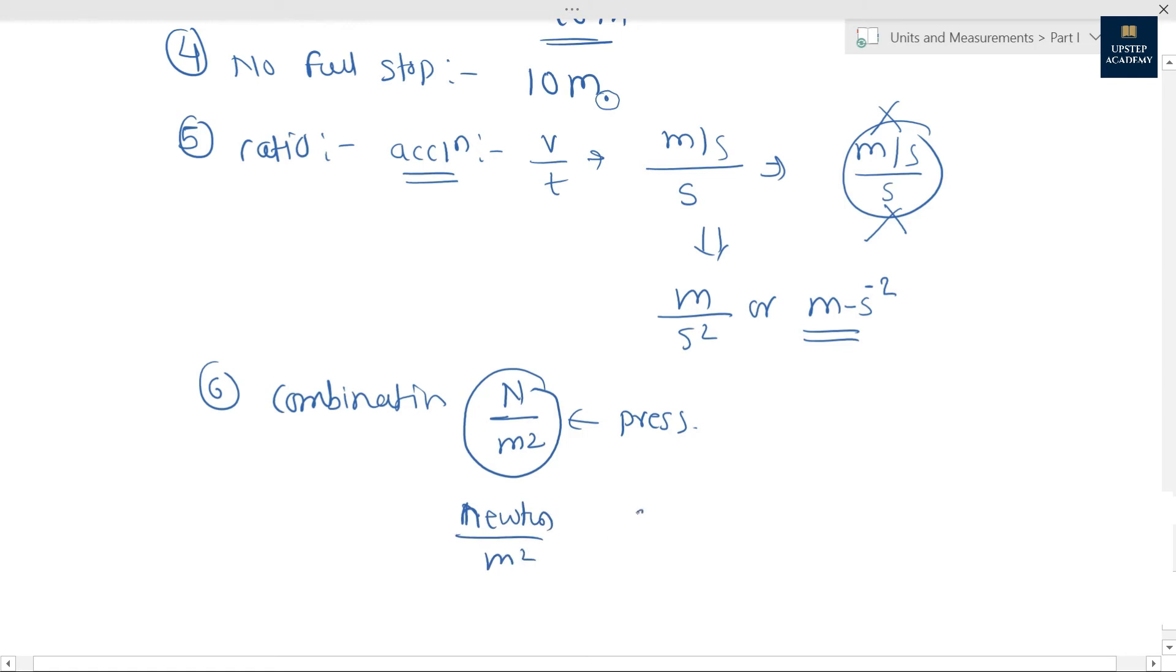Or there should not be like Newton per square meter. These are the wrong methods of showing units. This is the correct convention to show the unit in combination. Let's go for seventh one.